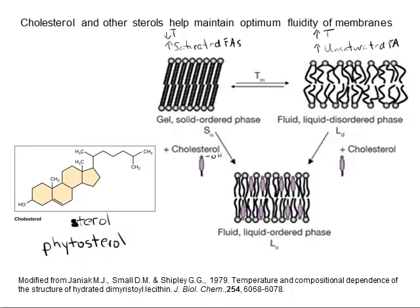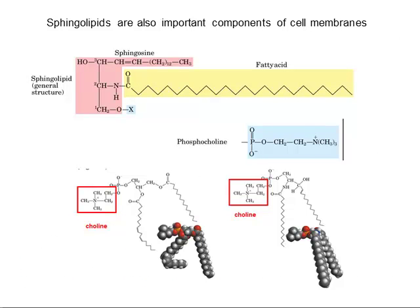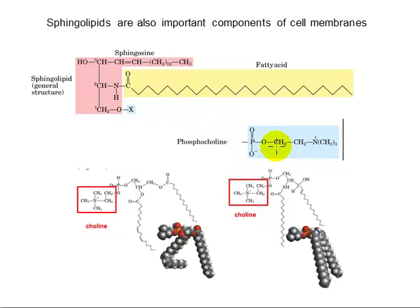Glycerophospholipids and cholesterol are not the only types of membrane lipid. Sphingolipids are also present and have important functional roles, which we'll discuss later when we look at membrane structure and function in more detail. Sphingolipids are not based on a backbone of glycerol but rather on a molecule called sphingosine, which contains a long hydrocarbon tail of its own. A fatty acid is covalently bonded to the nitrogen of sphingosine, and another variable group — often phosphocholine, a phosphate bonded to choline — is also attached. Comparing the head groups of glycerophospholipids and sphingolipids, we can see the structural similarity.